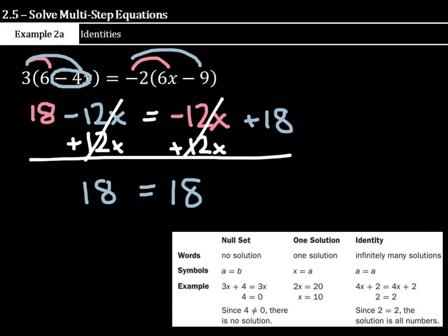So this is an example of the identity where we have infinitely many solutions because no matter what you put in for x, you could put in 1 or 2 or 3 or negative 1, 2, 3, or any number you can possibly imagine, and you will get the left side equaling the right side. So our answer here is all real numbers.